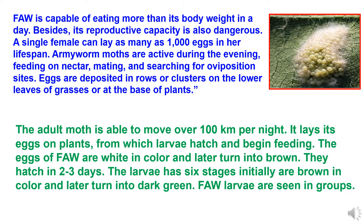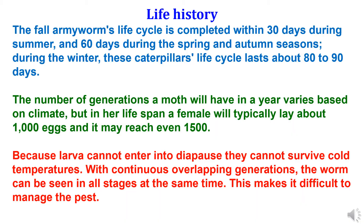The Fall Army Worm is capable of eating more than its body weight in a day. Its reproductive capacity is also dangerous — a single female can lay as many as 1,000 eggs in her lifespan. Army worm moths are active during the evening, feeding on nectar, mating, and searching for oviposition sites. Eggs are deposited in rows or clusters on the lower leaves of grasses or at the base of plants. The adult moth is able to move over 100 kilometers per night. Eggs are white in color, later turning brown, and hatch in two to three days. Larvae hatch through six stages, initially brown and later turning dark green, and are seen in groups.